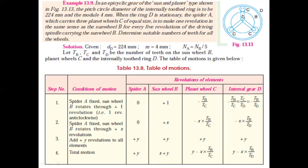If you give plus one rotation to sun gear B, then C will move anticlockwise, so it will be minus TB/TC. If C is moving anticlockwise, D will also move anticlockwise, so it will be minus TB/TD. Then, as before, you give X amount of RPM to all elements, then give Y revolutions to all elements where the arm was fixed — it will have Y revolutions. The last step is total motion, by adding step two and step three. By knowing the number of teeth and solving for unknowns X and Y, we get the corresponding speeds.